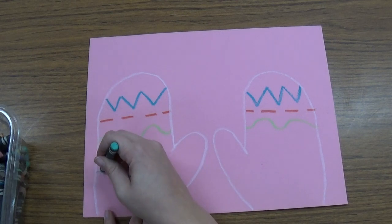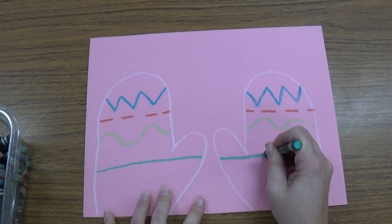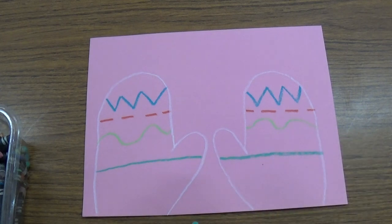If I do a straight line on this mitten, I'm going to use the same color and make a straight line on this mitten so that they are symmetrical.